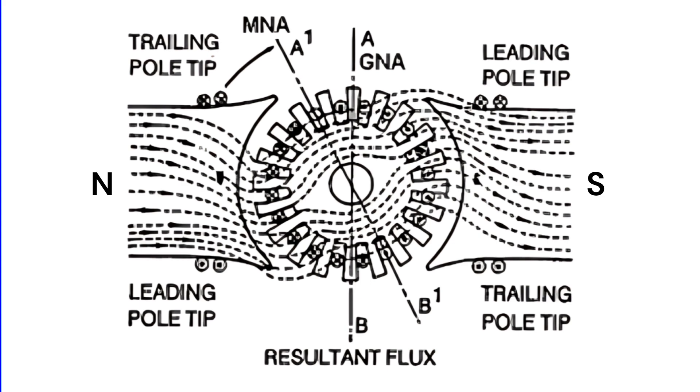For instance, if a motor spins clockwise, the lower tip is the leading tip at the north pole and the upper tip is the leading tip at the south pole. When the rotation direction is reversed, as in a generator, these positions switch.